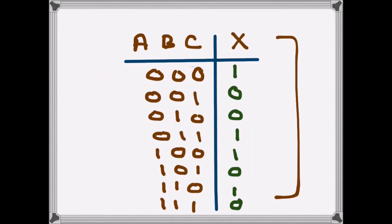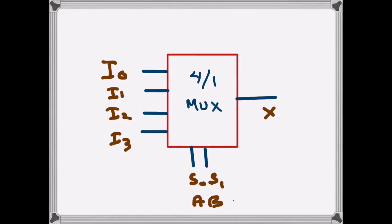The strategy is: we look at the changes of the select inputs and accordingly compare the input line with the output line. We have to compare C with X — what happens between C and X as our select inputs change. A and B are the select inputs, so A and B select which input line goes to the output — that's what the multiplexer does.